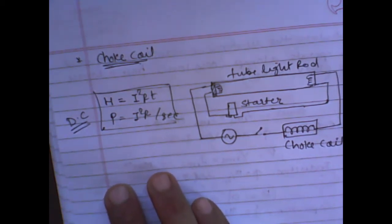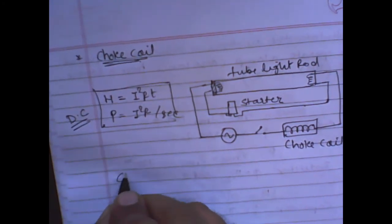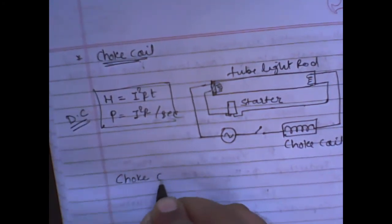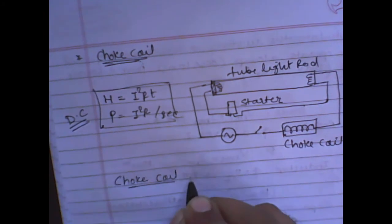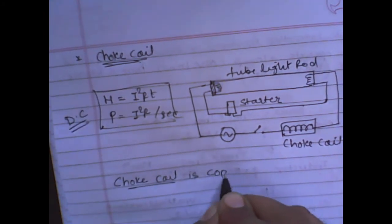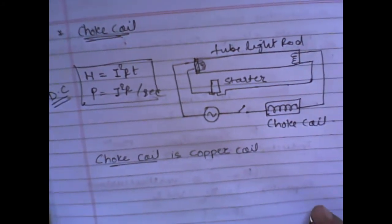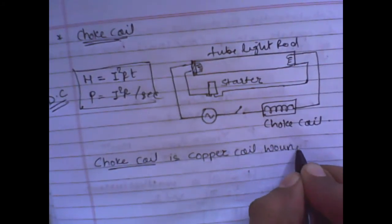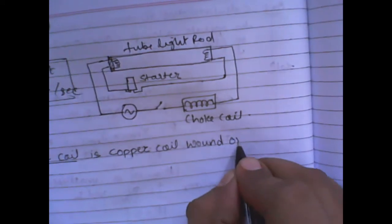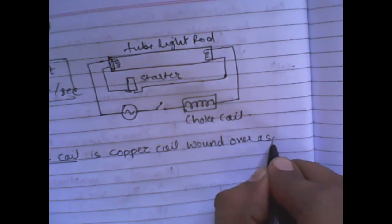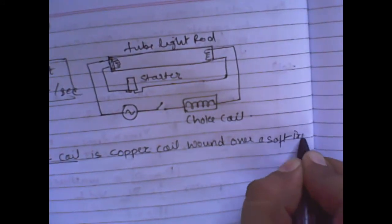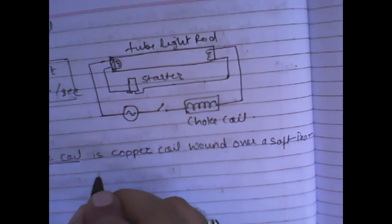What is a choke coil? Choke coil is a copper coil. Choke coil is nothing but an inductor coil, a copper coil wound over a soft iron laminated core.